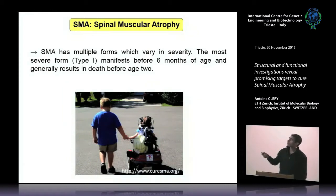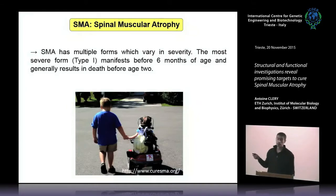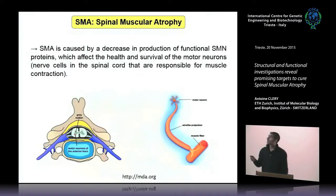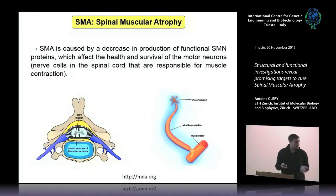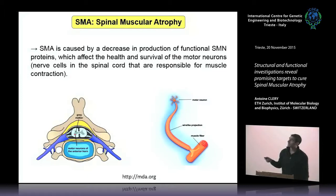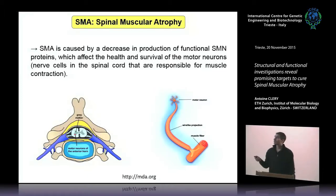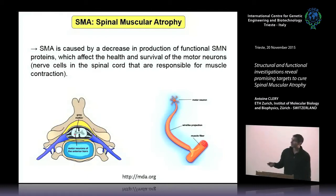This disease has multiple forms which vary in severity. The most severe form is type 1, which manifests before 6 months of age and generally results in death before age 2. We know that this disease is caused by a decrease in production of functional SMN proteins, and these proteins affect the health and survival of motoneurons when they are at very low levels. Motoneurons are the nerve cells in your spinal cord responsible for muscle contraction.